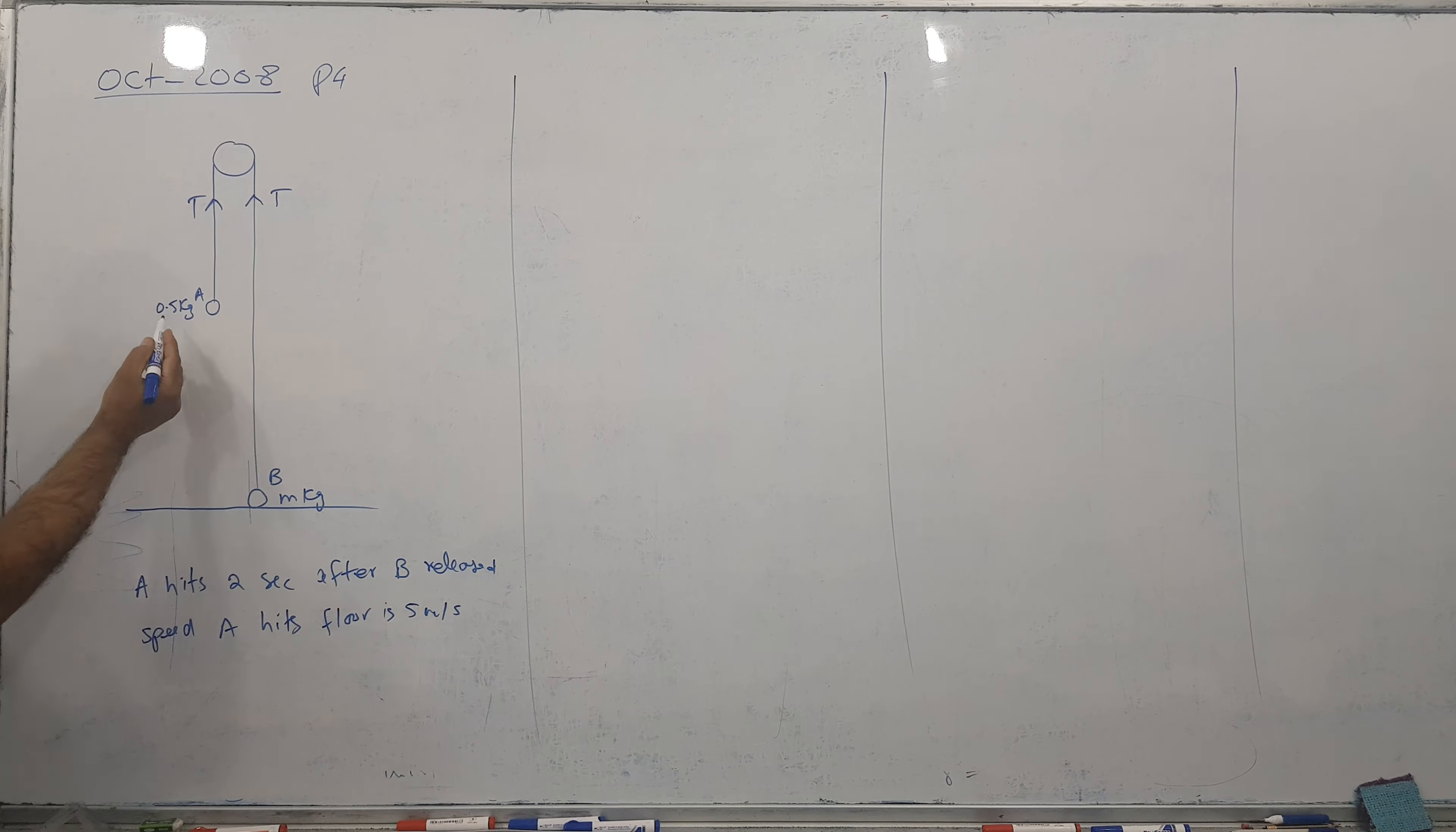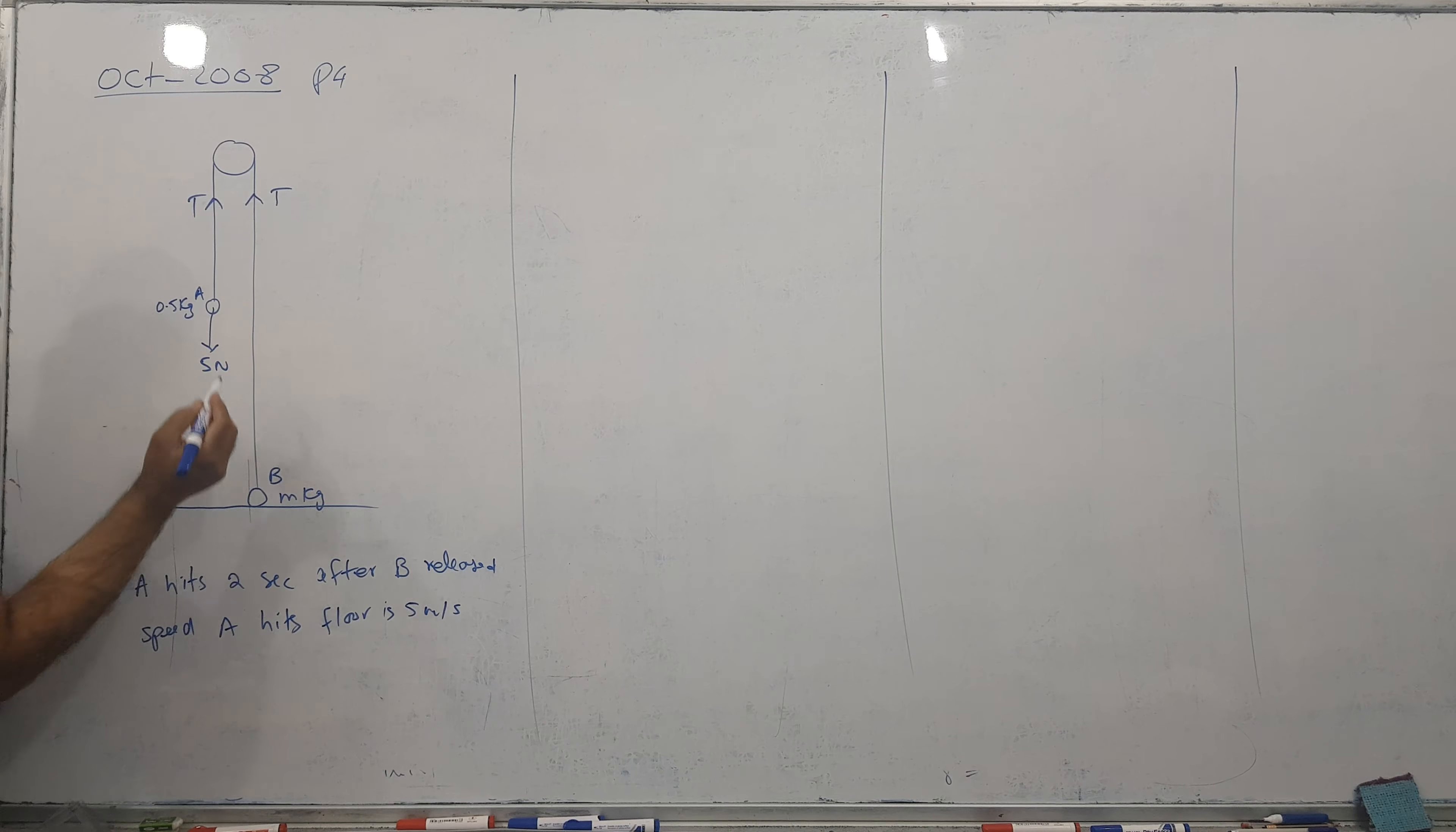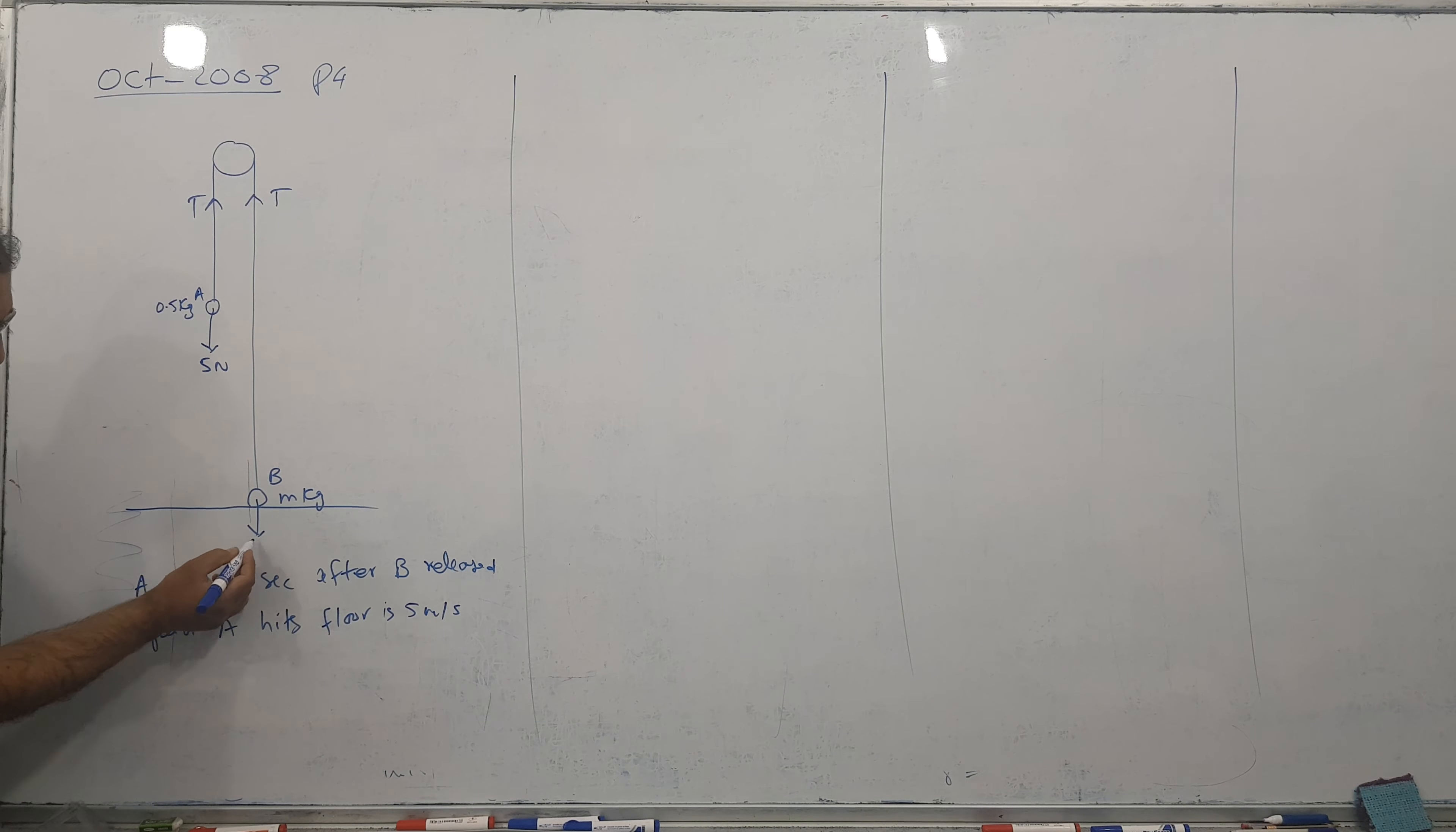This is mass 0.5, so into 10, this becomes 5 Newton downwards. Into 10, this becomes 10M Newton downwards.